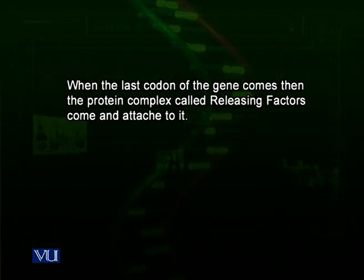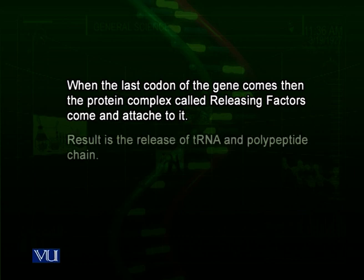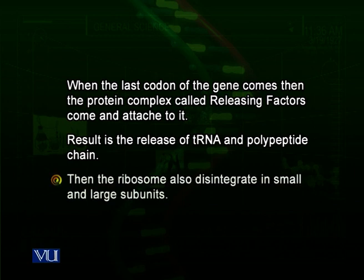At the end of the messenger RNA there is a codon called the stop codon. This codon does not match any transfer RNA. Instead, a protein complex called the releasing factor comes and attaches to that codon. When the releasing factor attaches, the polypeptide is released into the cytoplasm, broken away from the transfer RNA. The transfer RNA is also released, the ribosomal subunits separate, and the messenger RNA is released from the ribosome. This is how the process of translation completes.